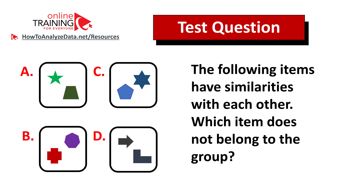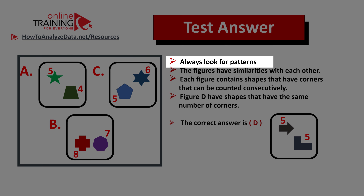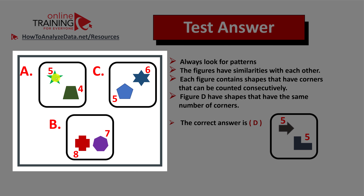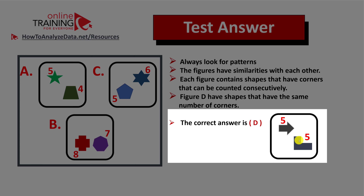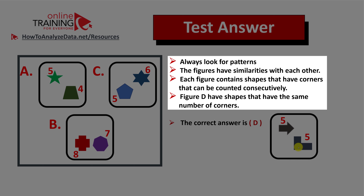Always look for patterns — specifically, the number of corners each shape has. For example, a star has five corners. The similarity between choices a, b, and c is that each shape inside the rounded square has a different number of corners: star has five, one shape has four, another has five, six, eight, and seven. But choice d has two shapes with the same number of corners.